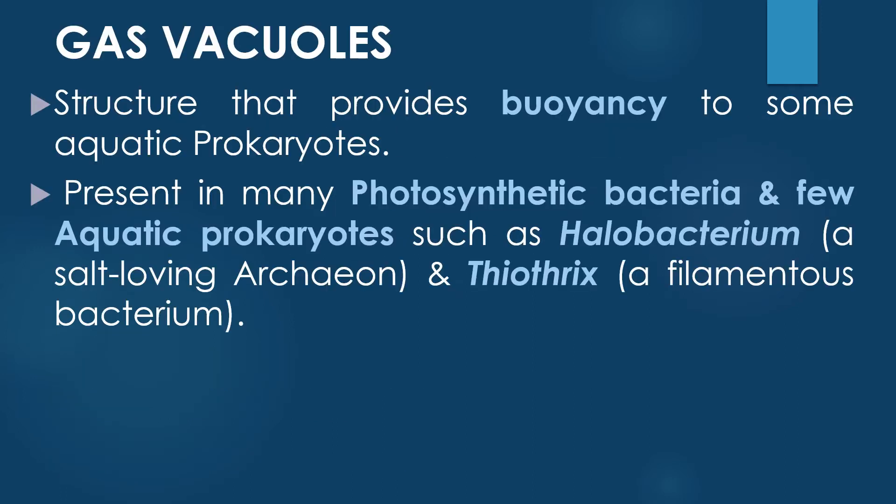First, the gas vacuoles. The gas vacuoles are the structures that provide buoyancy to the prokaryotes, particularly the prokaryotic organisms which are present in an aquatic environment. These vacuoles are present in many photosynthetic bacteria and a few aquatic prokaryotes such as Halobacterium, which is a salt-loving archaeon, and Thiotrix, which is a filamentous bacterium.